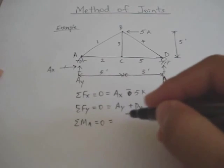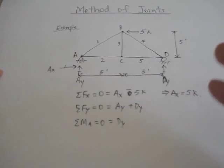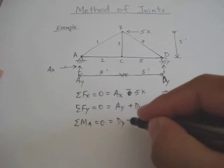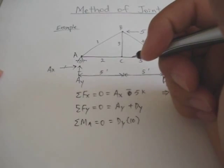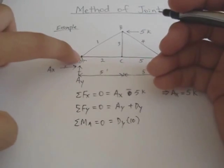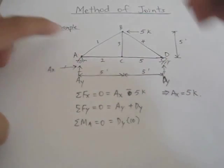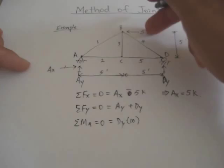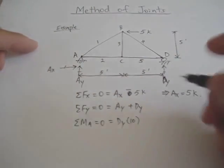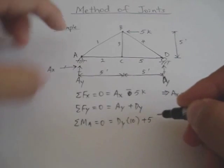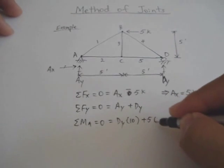Now Dy times 10 the moment arm. Since it will generate a counter clockwise rotation about pin A it's a positive moment. And then that 5 kip will also generate a moment about A. Also a counter clockwise rotation. So it's plus 5 times the moment arm is 5 feet.